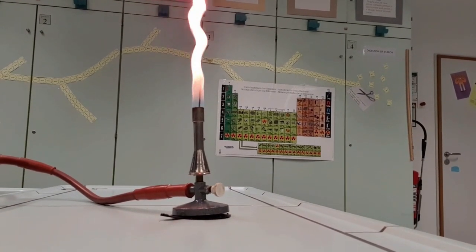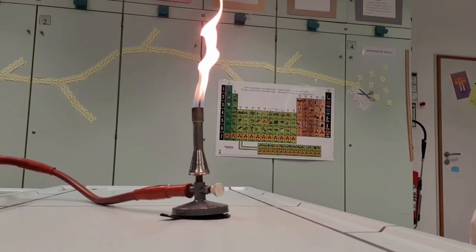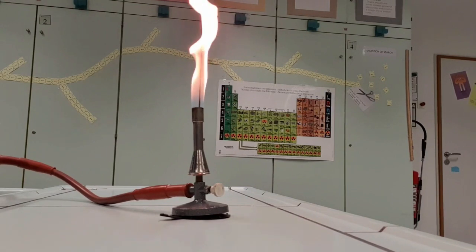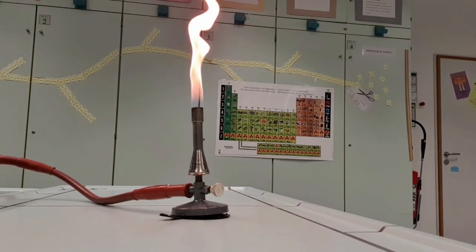So there you have it. A Bunsen burner lit on your safety flame. And always remember to use the safety flame if you are going to leave the experiment. This is safer because people can see the flame better than when it's on the blue flame which is hotter.